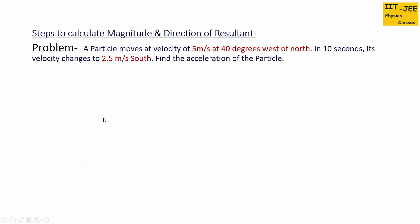Here is the problem based on subtraction of vectors. A particle moves at a velocity of 5 meters per second at 40 degrees west of north. In 10 seconds its velocity changes to 2.5 meters per second south. Find the acceleration of the particle.